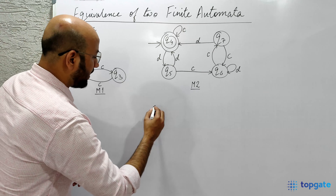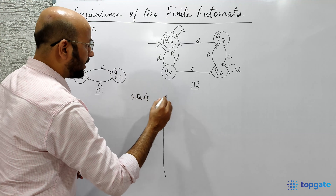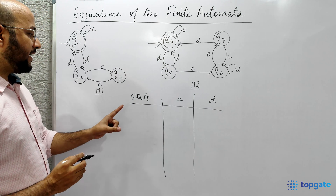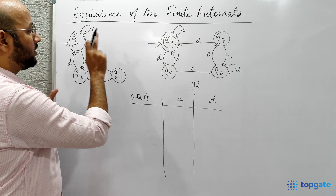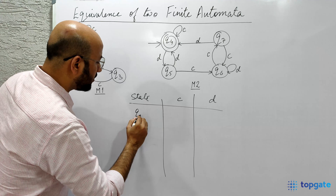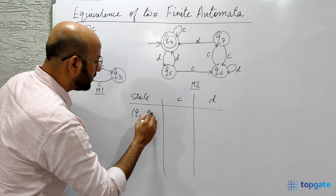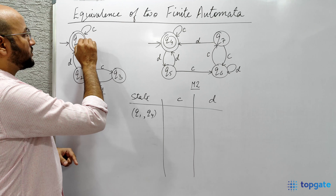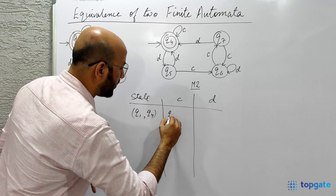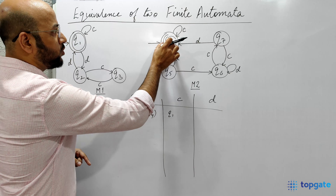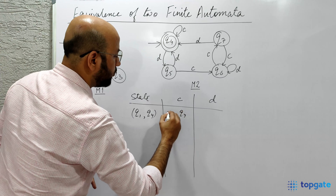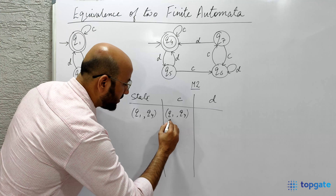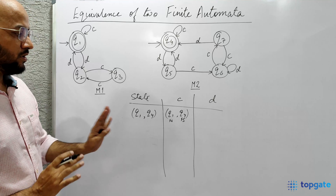I will make a table with states and input alphabets C and D. The first pair is the initial states: Q1 from M1 and Q4 from M2, giving the pair Q1, Q4. From Q1 with input C we transit to Q1, and from Q4 with input C we transit to Q4. So we get the pair Q1 and Q4 again. Since both Q1 and Q4 are final states, I write FS — no problem here.